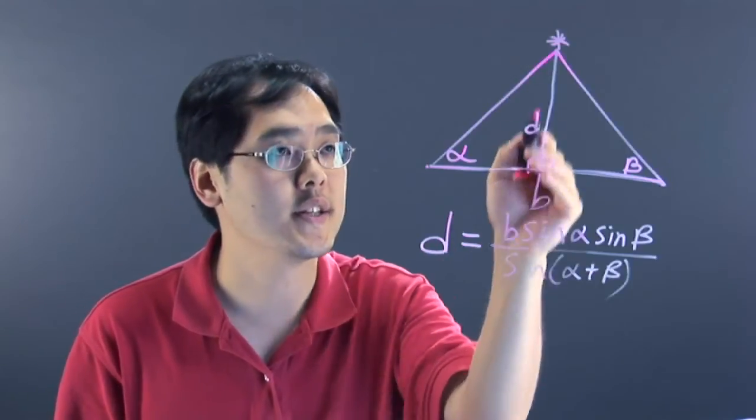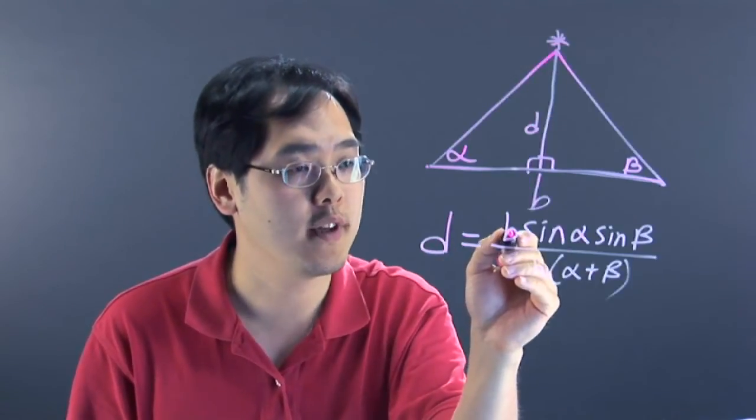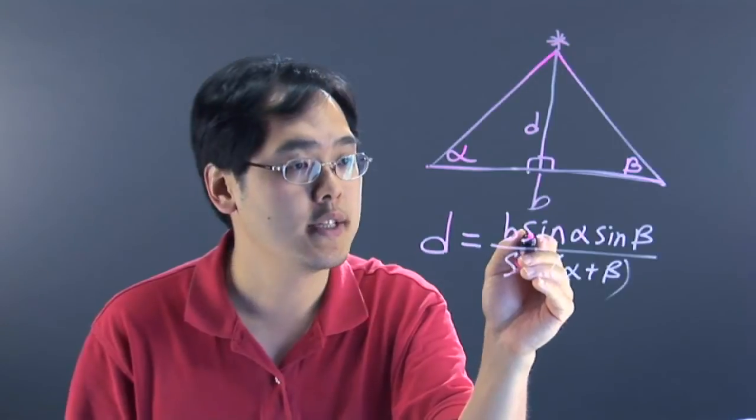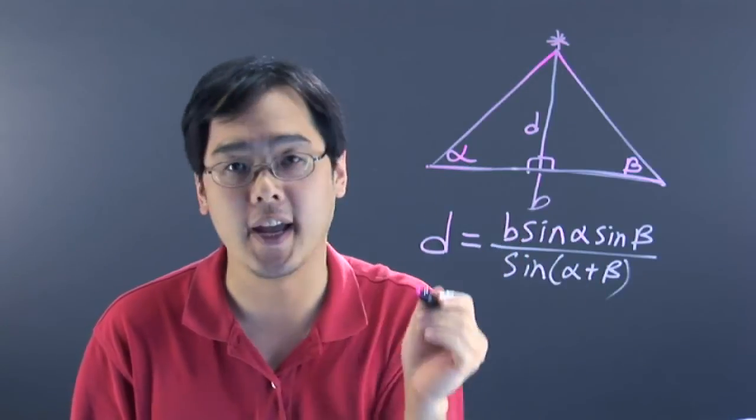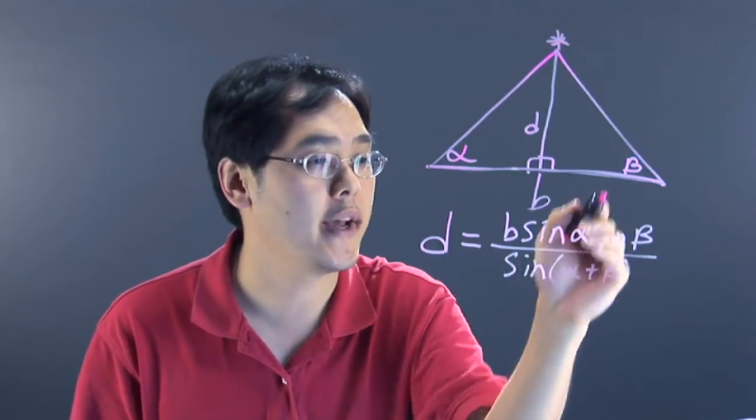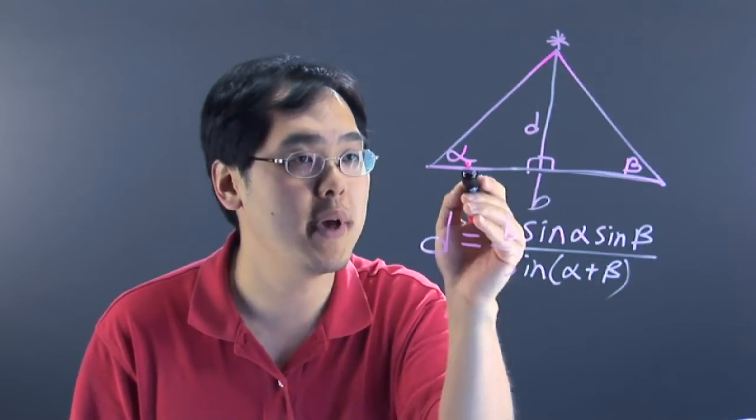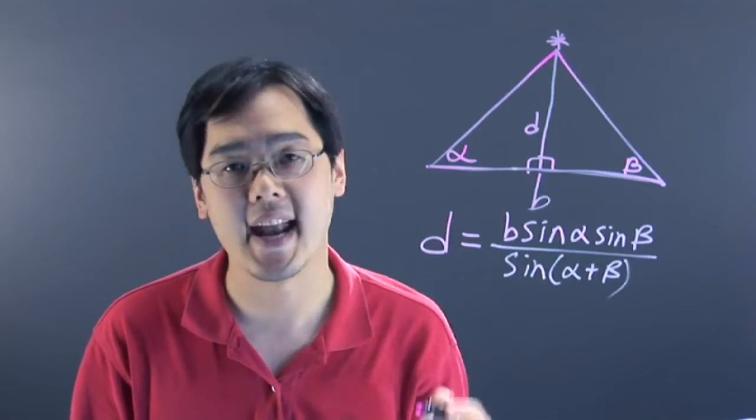What you're basically doing here is to find the distance of that particular point, you want to take the baseline that you're already given, times the sine of that alpha angle, times the sine of the beta angle, and divided by the sine of the measures of the two angles added together.